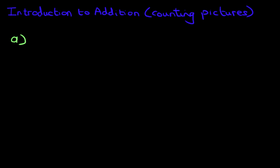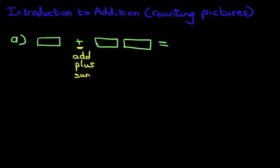Let's have a look at our first example. We've got a rectangle, then a plus, and two more rectangles. Now this sign here, I'm just going to spell this out, this is add. You can also say plus. And something a bit more complicated, you can say the sum.